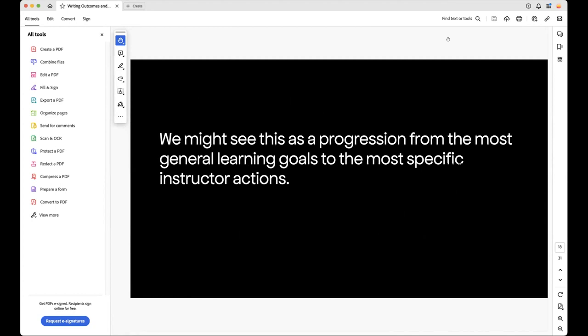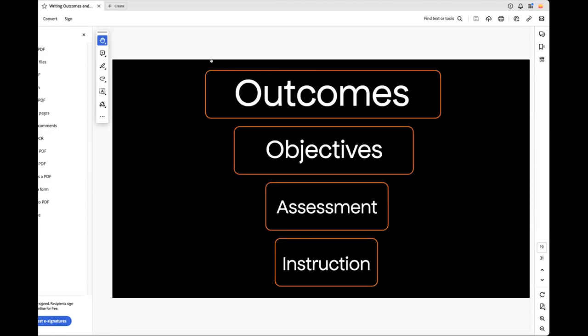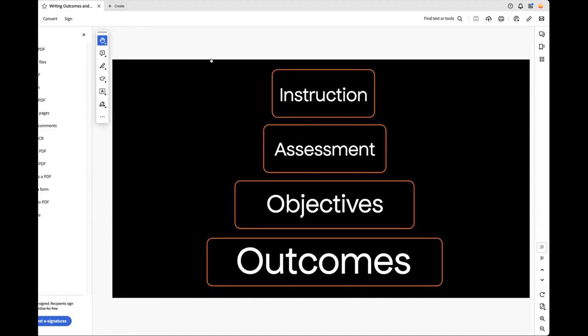We might see this as a progression from the most general learning goals to the most specific instructor actions. This is kind of an up-down ziggurat here. You're going from outcomes, the most broad and general, to objectives, then to assessment of that lesson or activity or project, then the day-to-day instruction. We're planning that way. But actually, when we deliver, when we plan, we go from the top down, we have this upside down pyramid or ziggurat that we're working with. But when we're actually instructing, we implement, we actually execute from the bottom to the top. We really start with, we're instructing and we're assessing as we go, especially in any course, whether it be studio or lecture, going from objectives, then out to the outcomes, which are the broad big picture of where we see ourselves going or in our students.